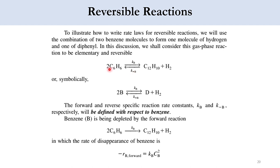The reaction is: 2 C₆H₆ → C₁₂H₁₀ + H₂, or simply two moles of B react to produce one mole of diphenyl and one mole of H₂. The forward and reverse specific reaction rate constants are defined with respect to the limiting reactant, which is benzene in this case. That is why it is written as K_B for forward and K_{-B} for reverse.